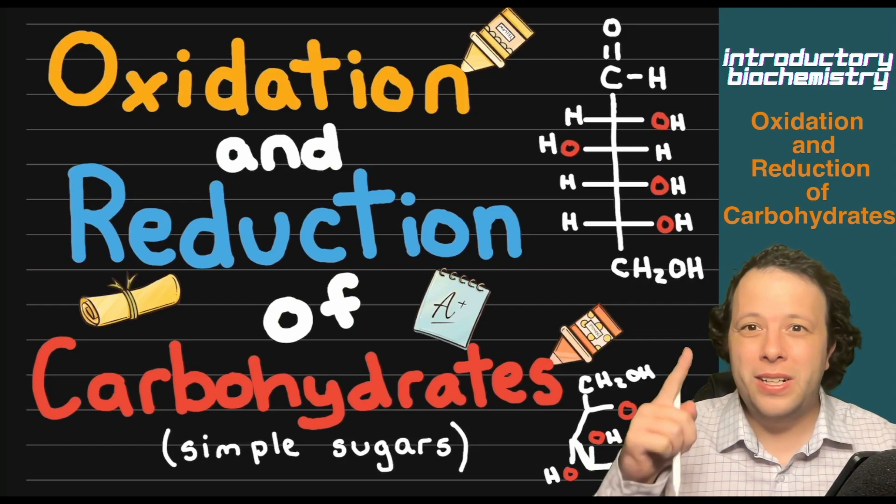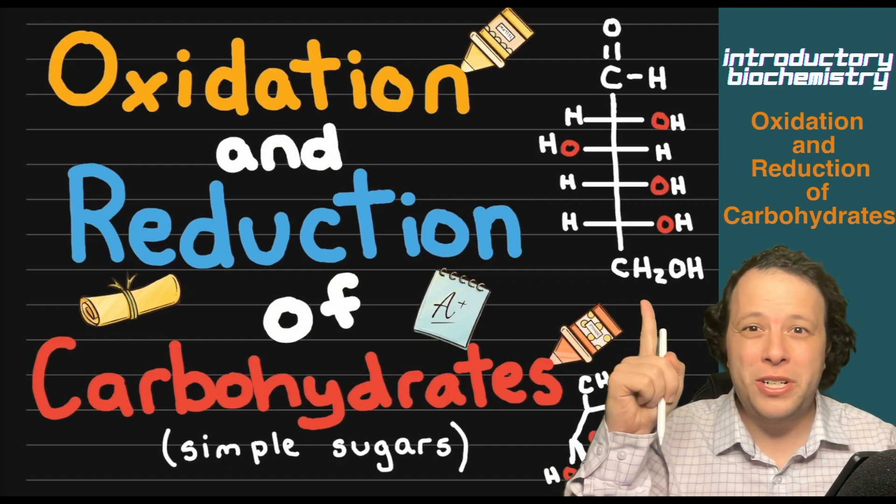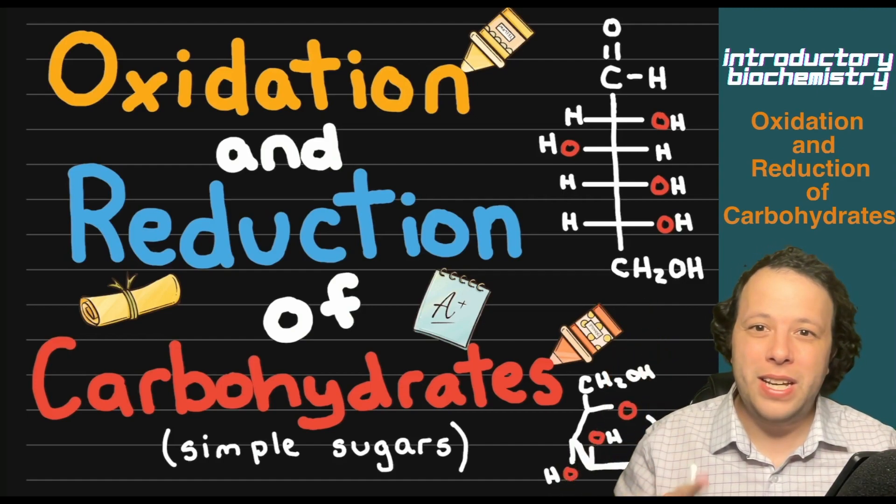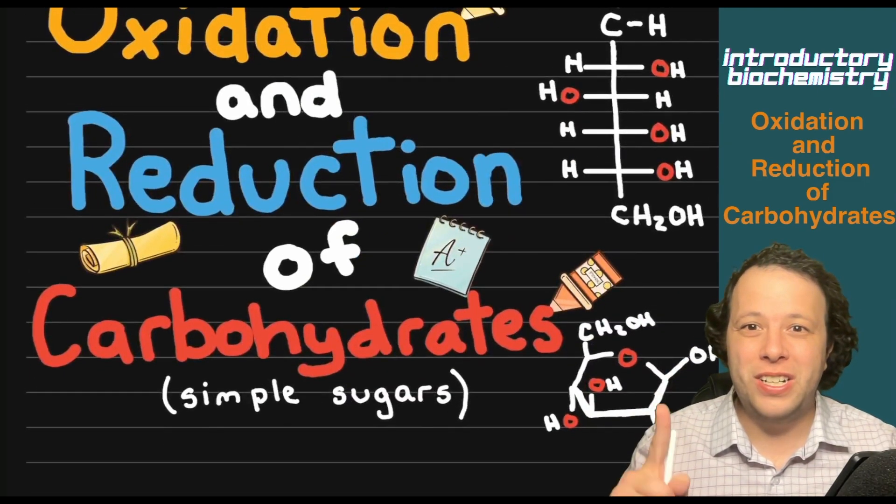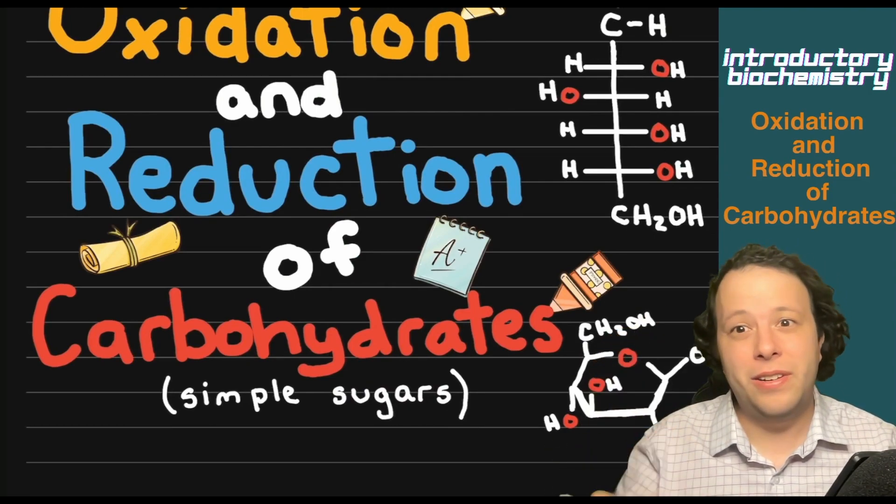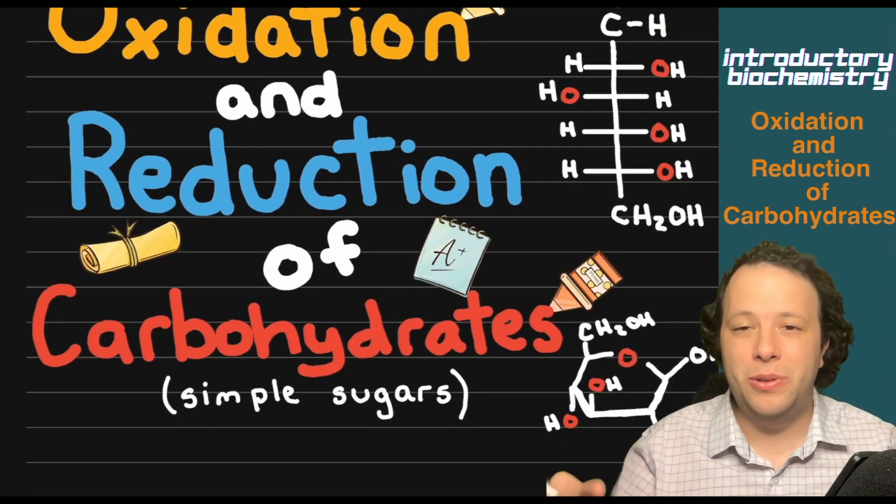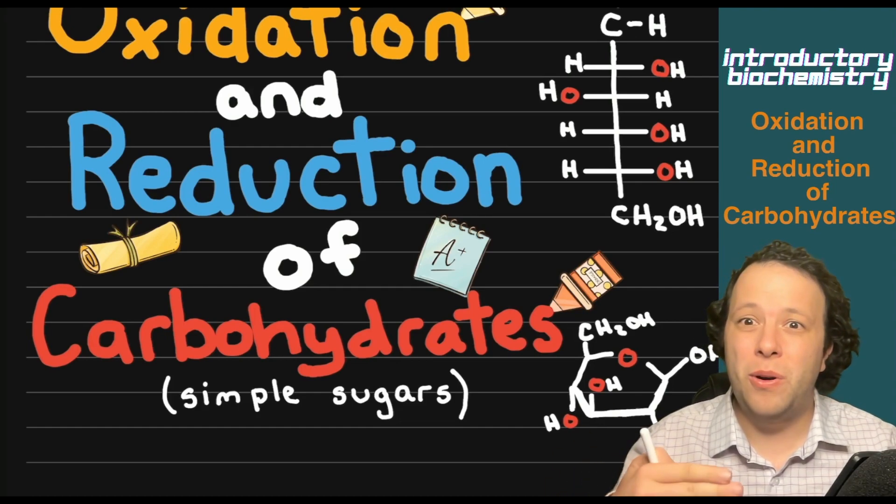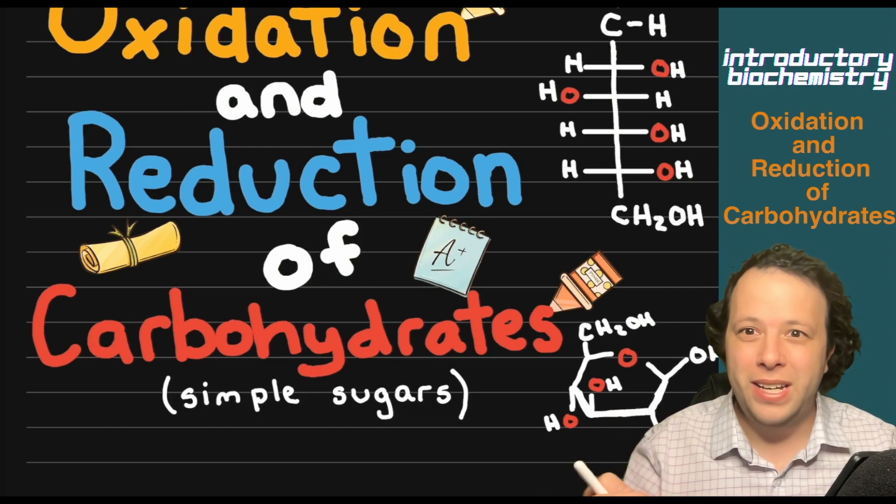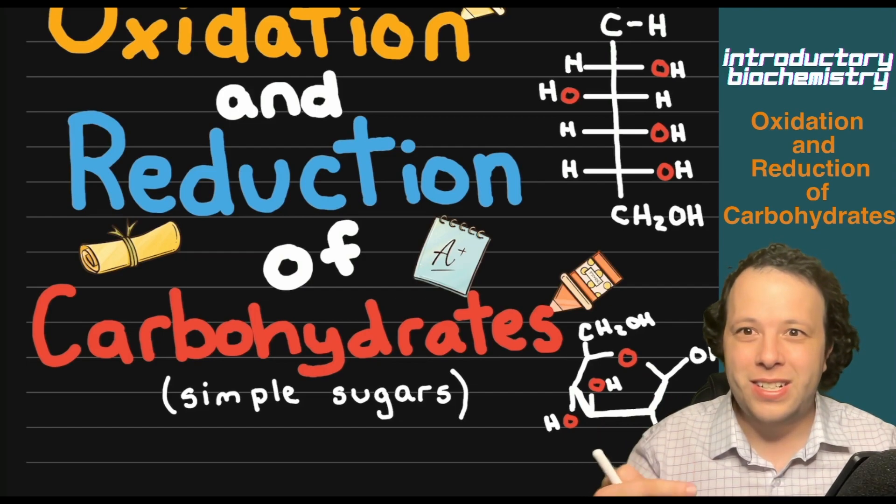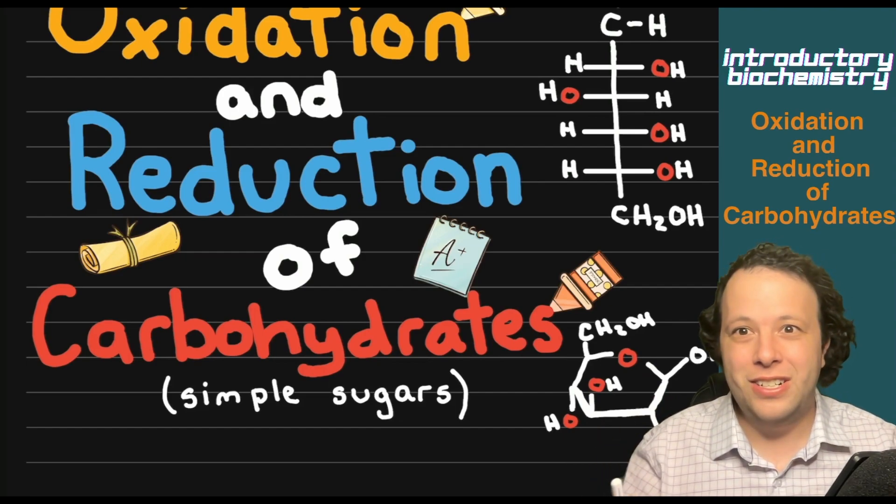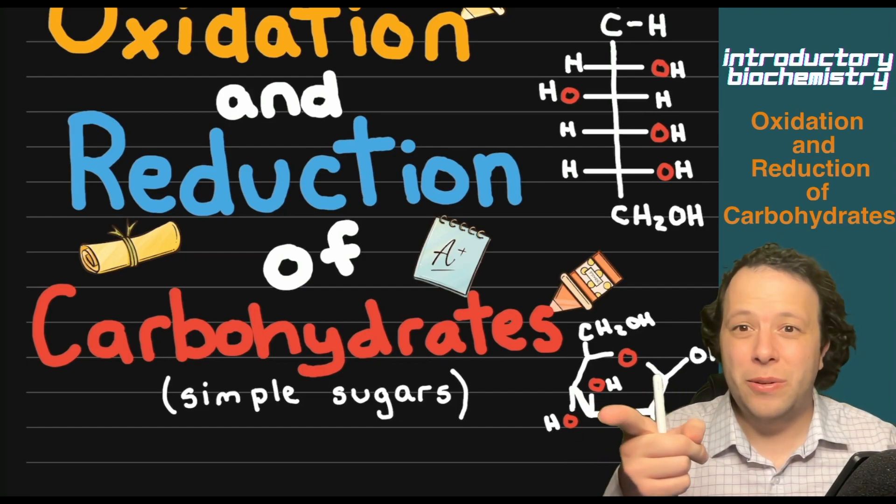With these, we're going to be using Fischer projections, which are when you take a Haworth projection and open it up. We're going to go through all the different reactions in a very simple to follow manner, including the different types of strong and weak oxidation as well as reduction and enzyme oxidation.